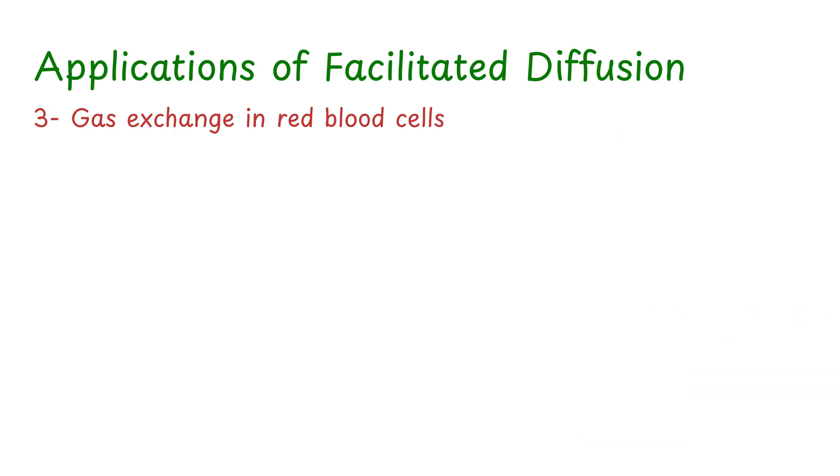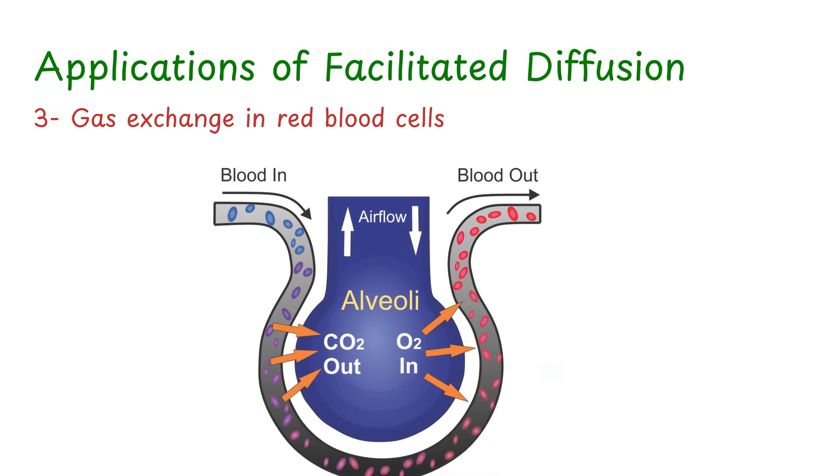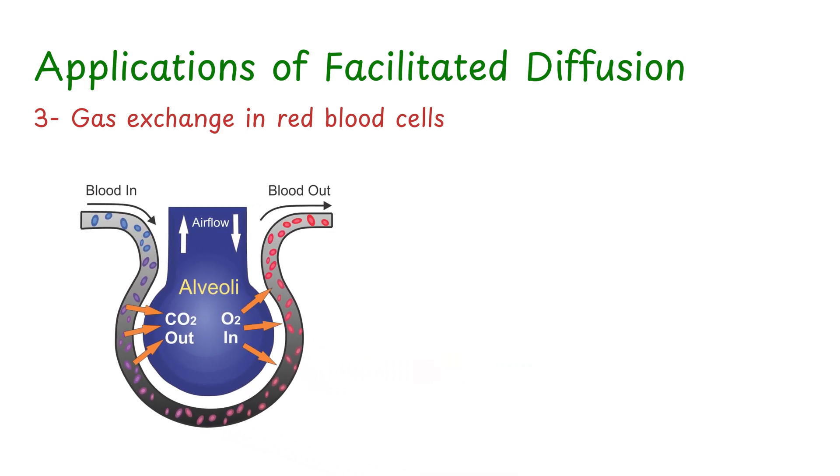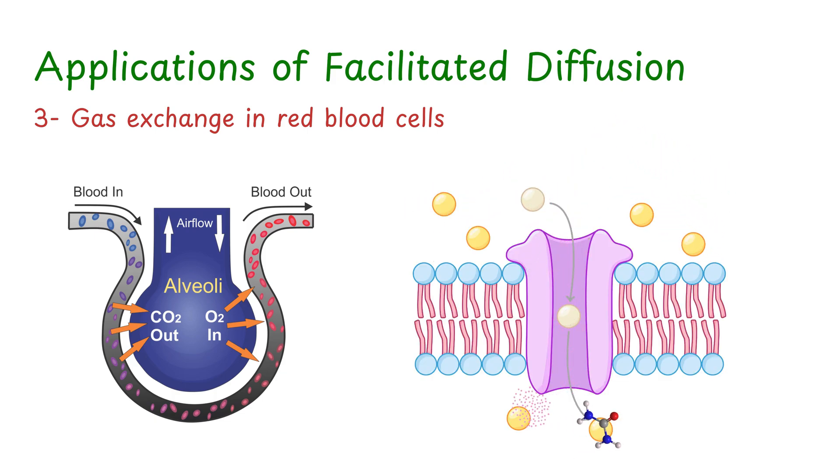Third example is gas exchange in red blood cells. Though gases like oxygen and carbon dioxide mostly move by simple diffusion, certain gases or larger molecules that attach to carrier proteins, such as urea or some waste products, may also rely on facilitated diffusion for efficient transport.